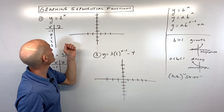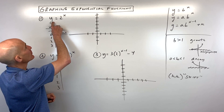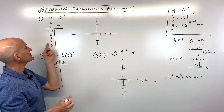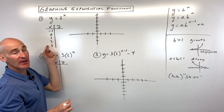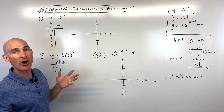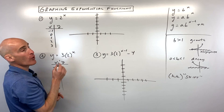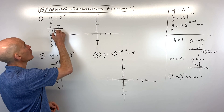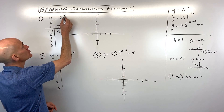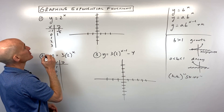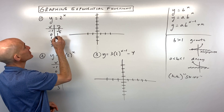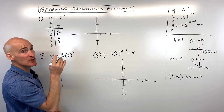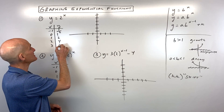Let's go through these five examples. For number one, y equals two to the x, I make a table picking a couple negatives, zero, and a couple positives. Two to the negative one — with a negative exponent you take the reciprocal — gives one half. Two to the zero is one, two to the first is two, two squared is four, two cubed is eight.